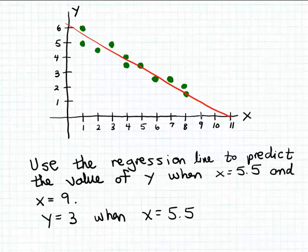So we go through exactly the same procedure. We just find 9 on the x-axis and simply go up until we hit our regression line.